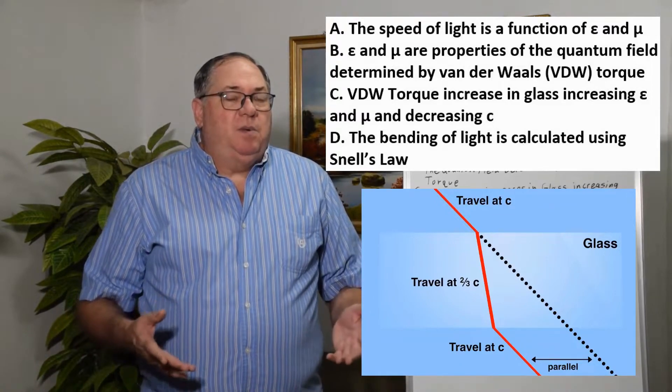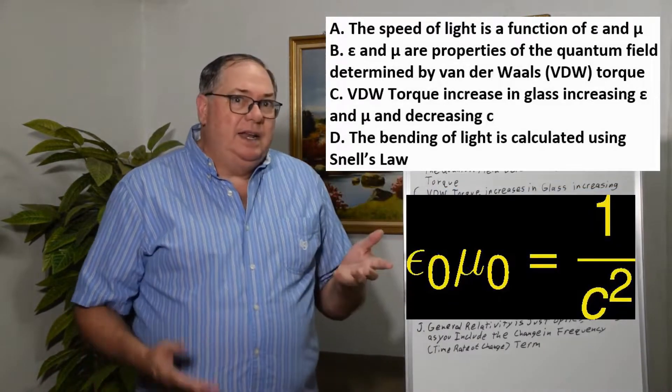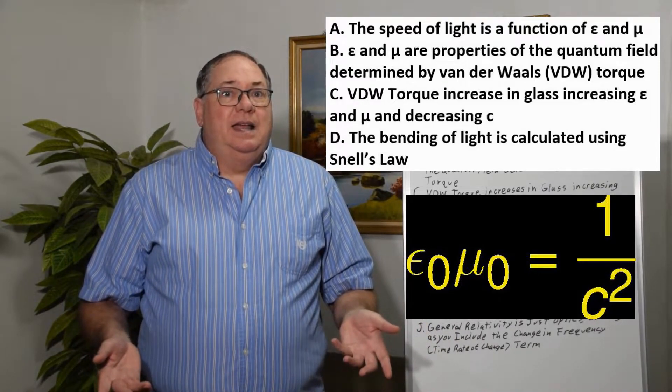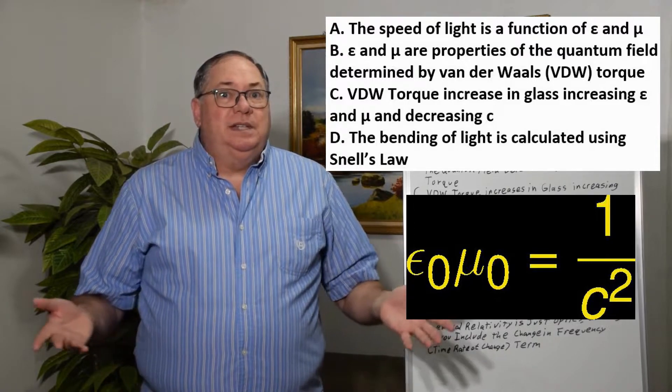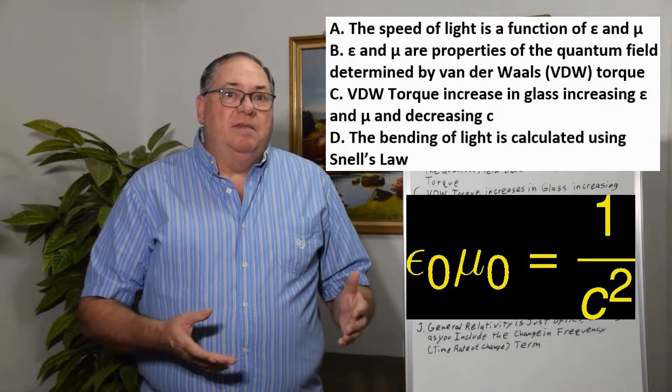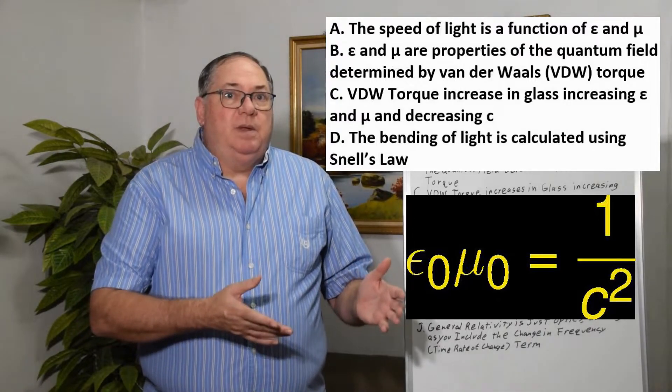When you start with what we know, the speed of light is a function of permittivity and permeability. Epsilon times mu equals one over c squared. It's that simple. We need to think of the permittivity and permeability first.